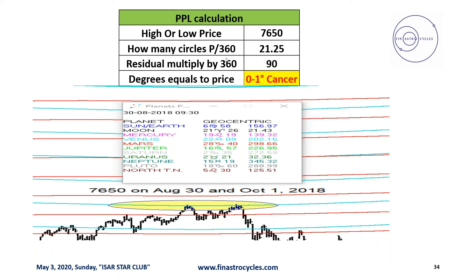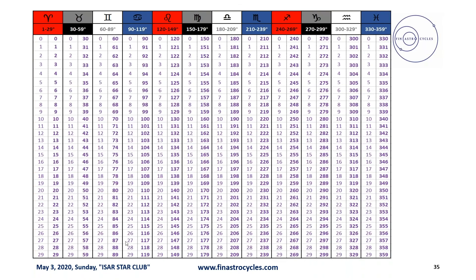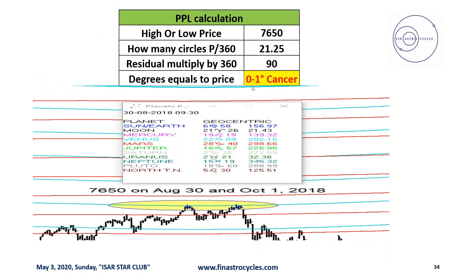This price of 7650 — as we know the convergent factor — 7650 divided by 360 comes to 21.25. If we take the residual 0.25 and multiply it by 360, that comes to 90. So in this conversion table, if you see the 90, the price here is 0 degrees of Cancer.